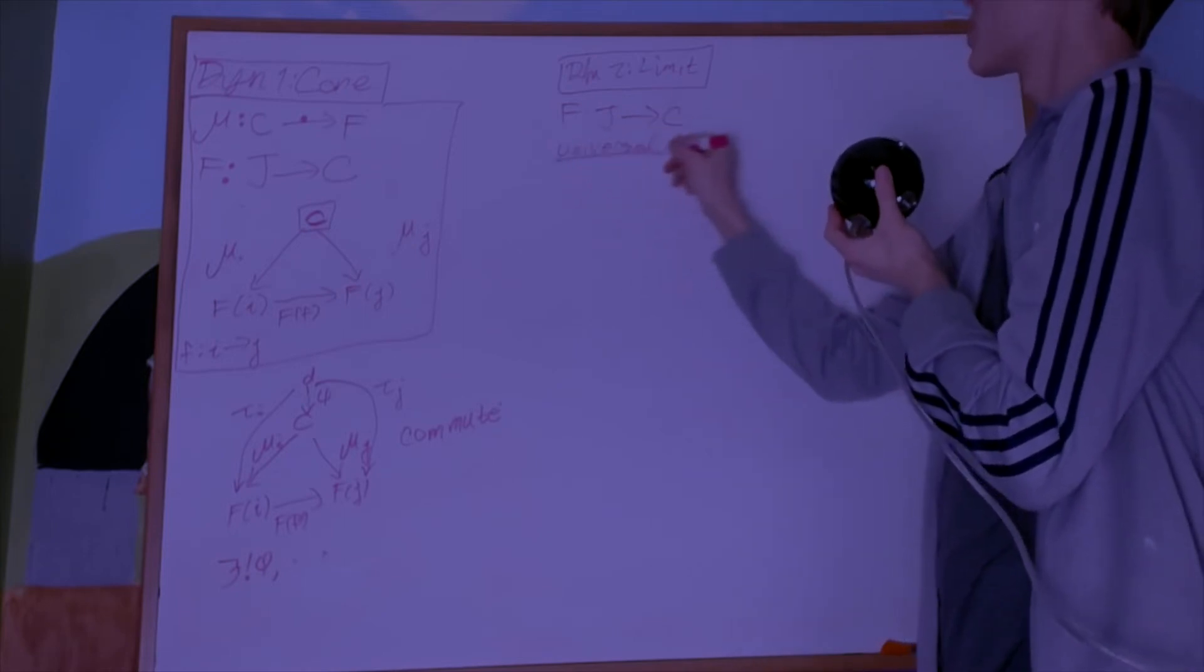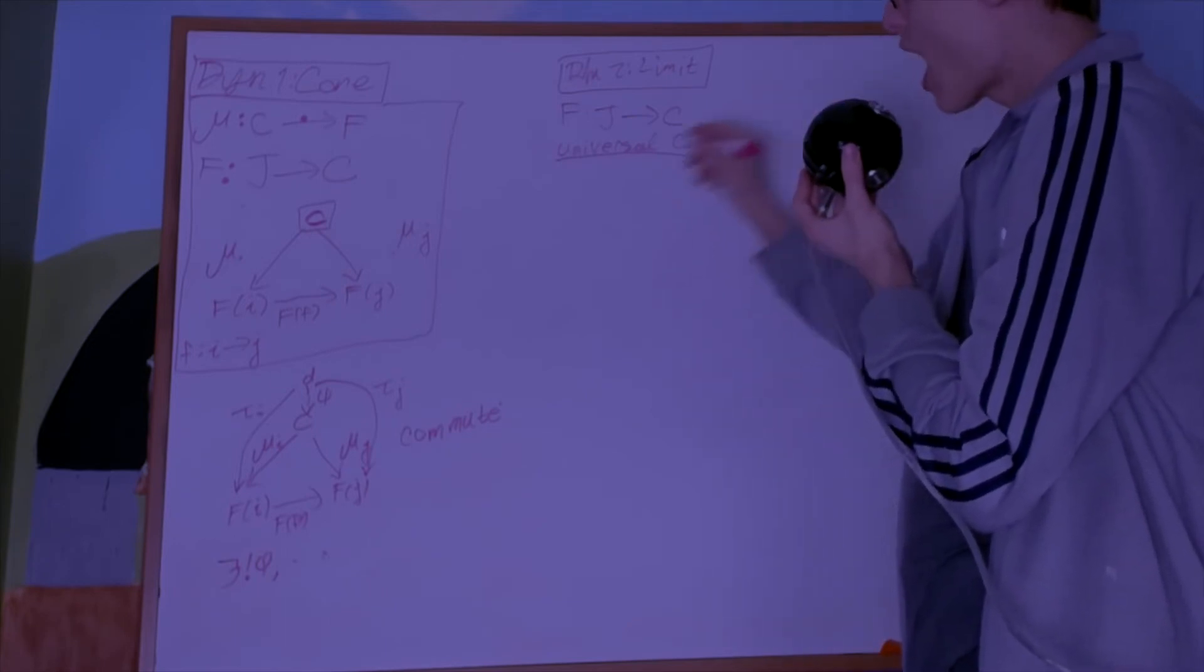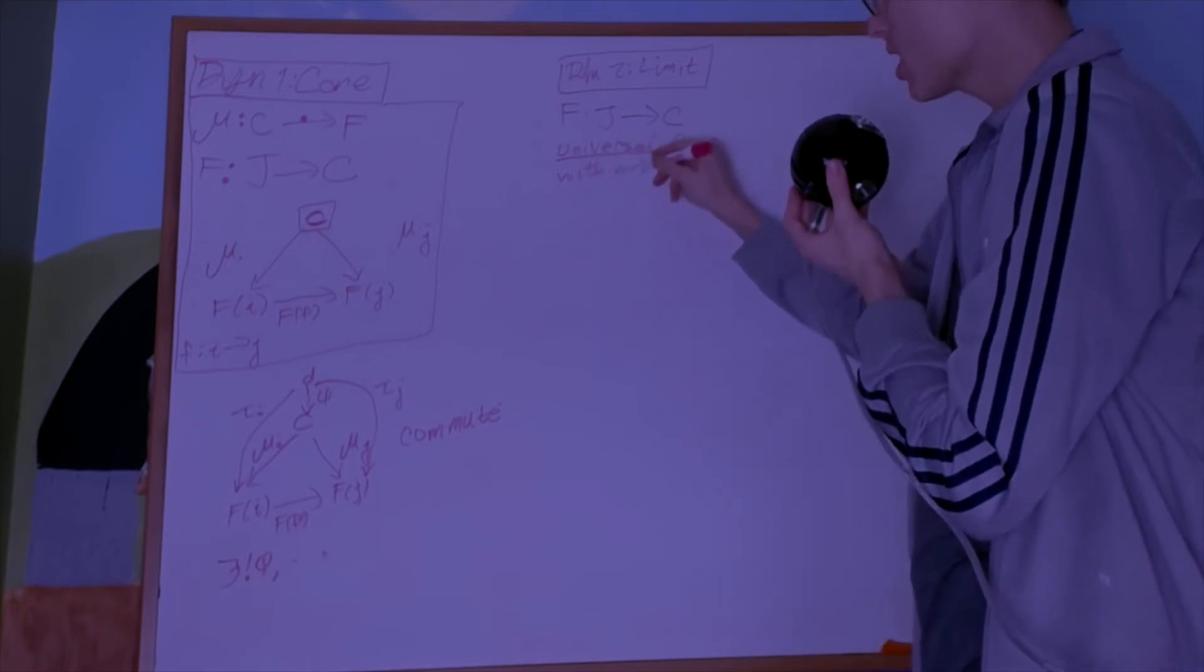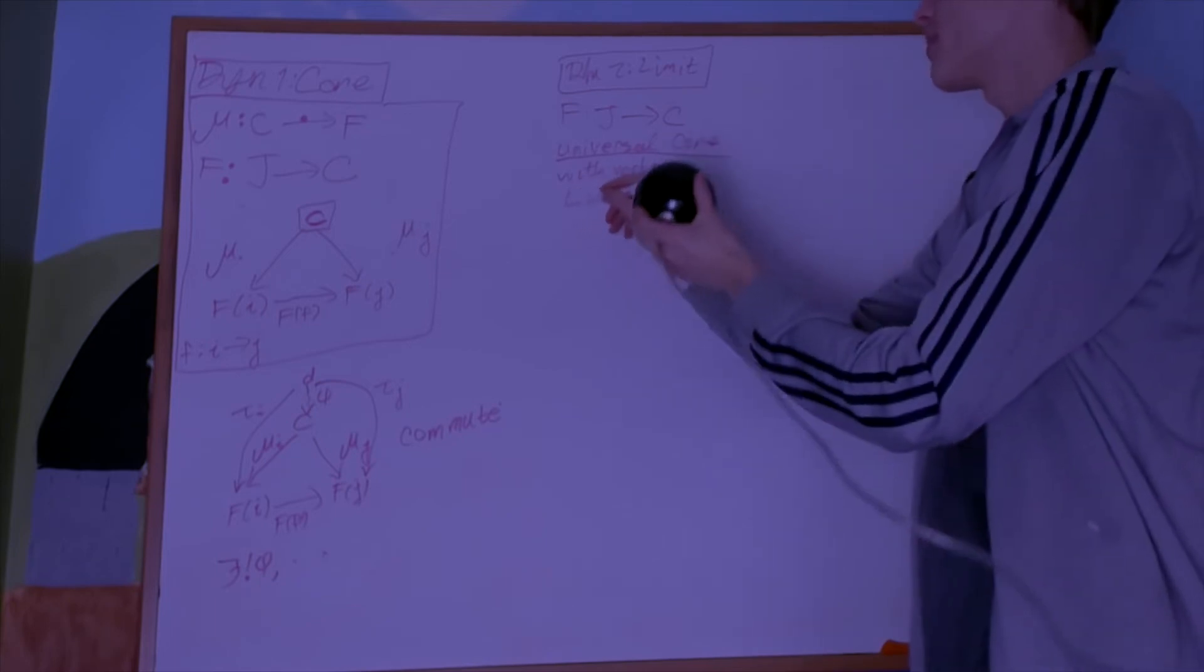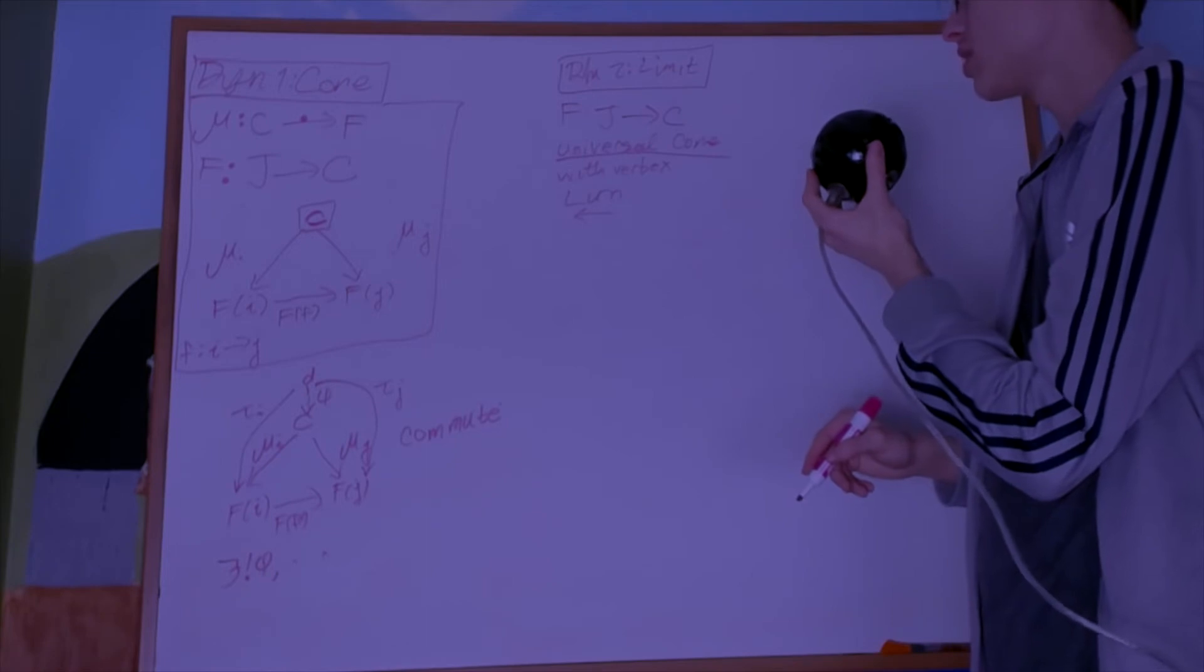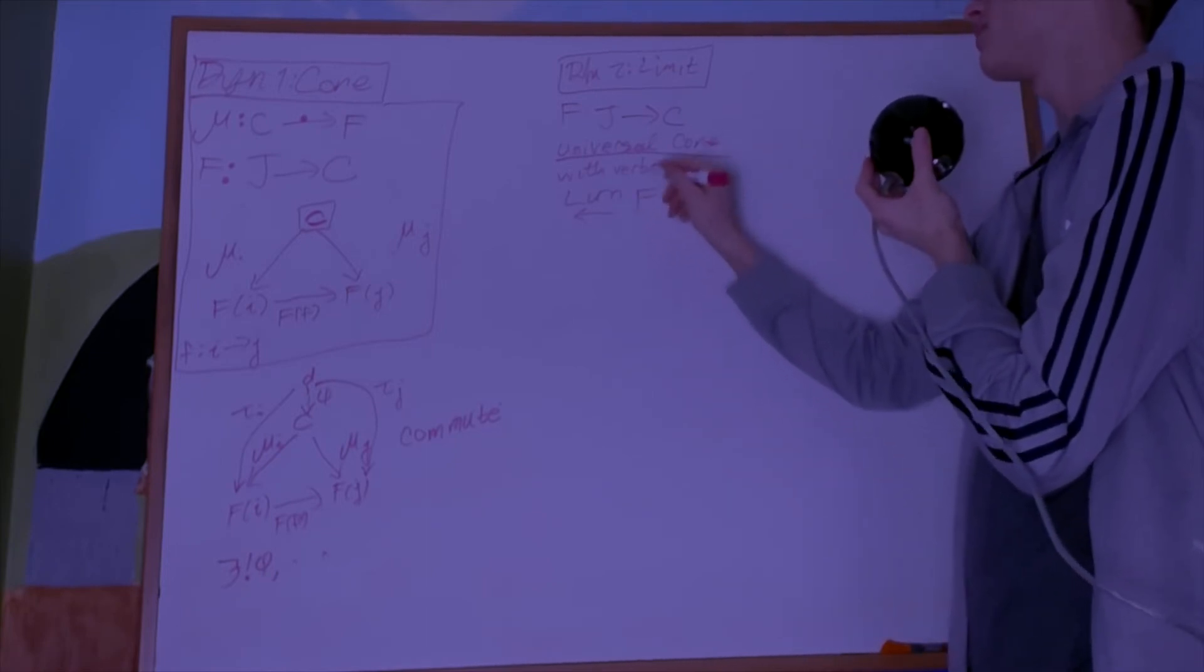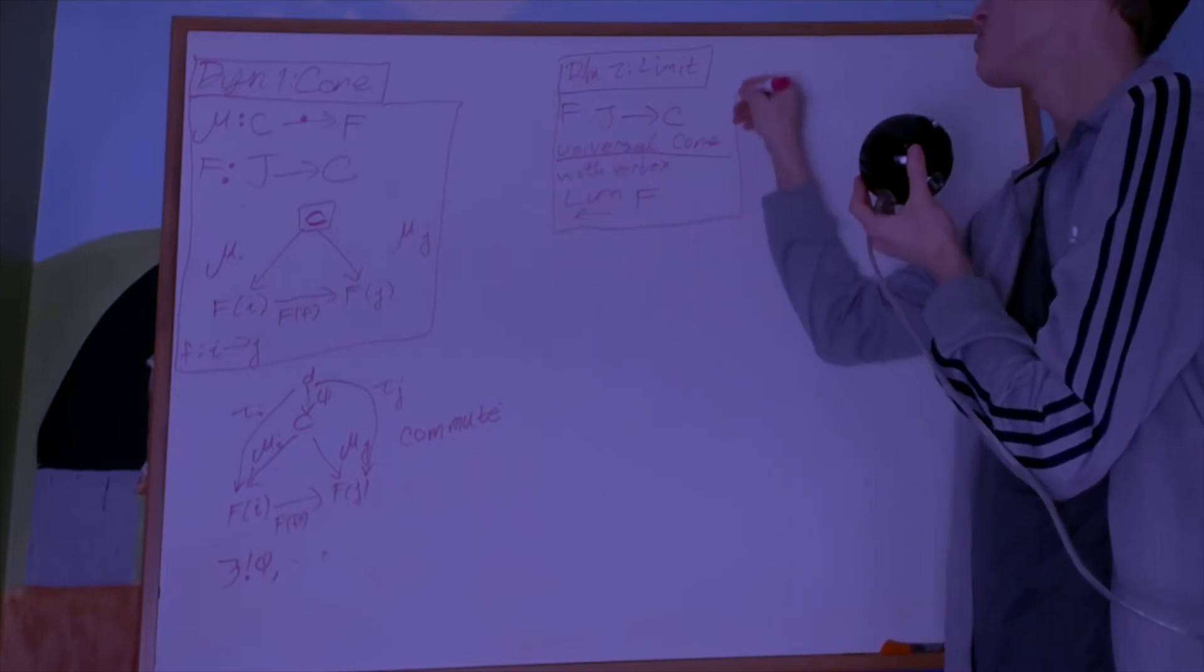So it is a universal cone, but the object or the vertex is given a special name. It's given the name limit with a backwards arrow. Limit with a backwards arrow of F. The reason why it's backwards is beyond me.